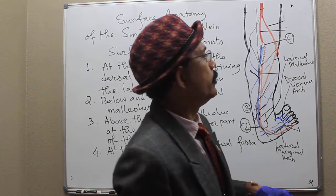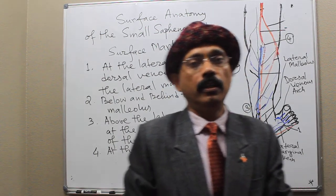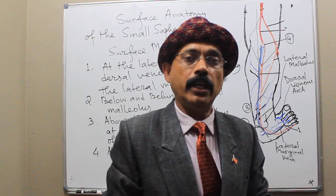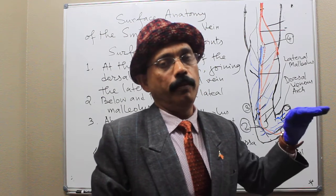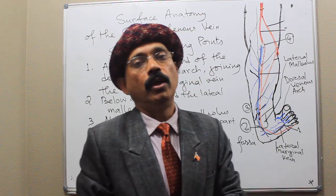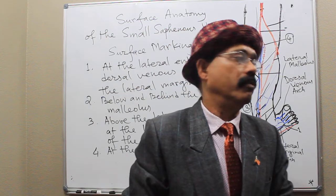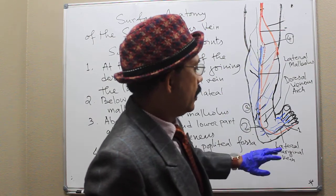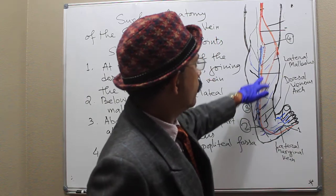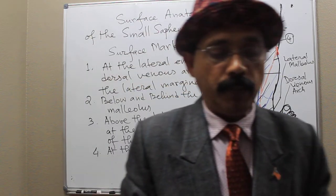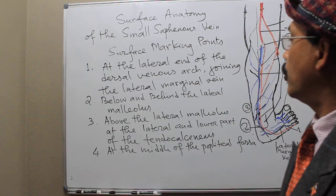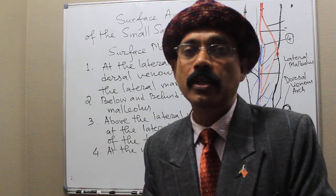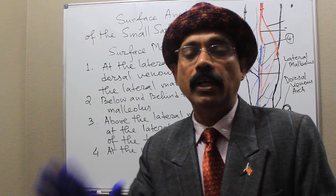The small saphenous vein opens into the deep fascia and the popliteal fascia in the middle of the popliteal fossa, where it opens into the popliteal vein. When it passes underneath the adductor hiatus, it enters the adductor canal, and at that level its name changes from the popliteal vein to the femoral vein. That's all about the surface anatomy of the small saphenous vein. If you like my video, please support my channel, subscribe, and share the information with your friends. Have a nice day, bye!